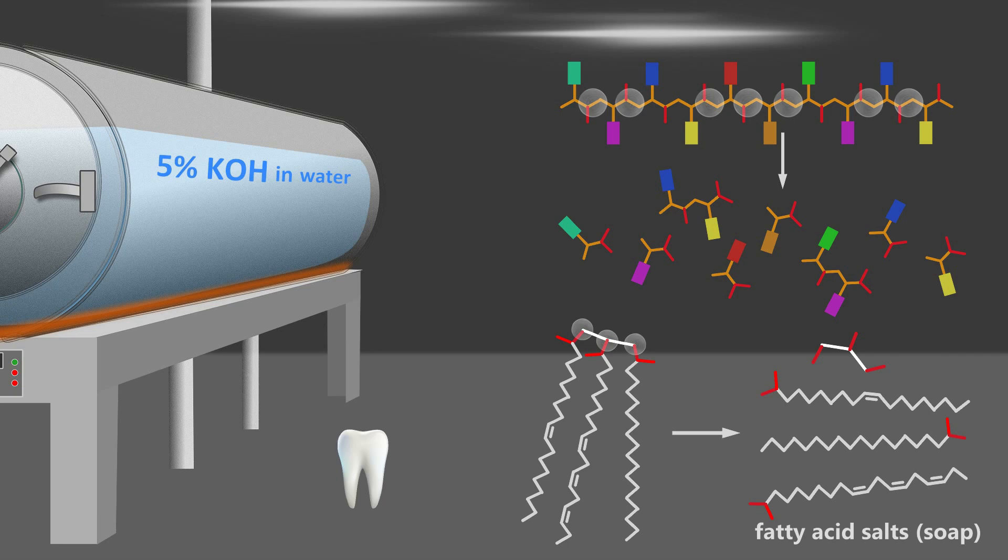The insoluble materials of the teeth and bones do not react. The hard mineral of the teeth and bones is called hydroxyapatite and is composed of calcium, phosphate, and hydroxide.